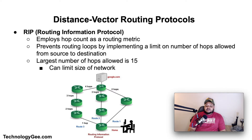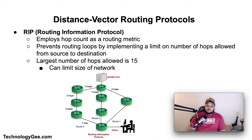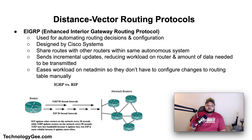A form of a distance vector routing protocol is called RIP, or Routing Information Protocol. RIP is one of the oldest distance vector routing protocols, which employs the hop count as a routing metric. RIP prevents routing loops by implementing a limit on the number of hops allowed in a path from source to destination. The largest number of hops allowed for RIP is 15 hops, which limits the size of networks that RIP can support.